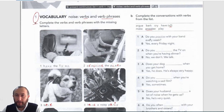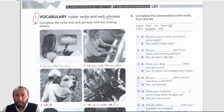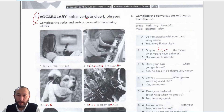The first one is already done: 'Do you practice with your band every week?' B says: 'Yes, every Friday night.' Number two: 'Do you have the TV on when you are having dinner?' B says: 'No, we don't — we talk.'